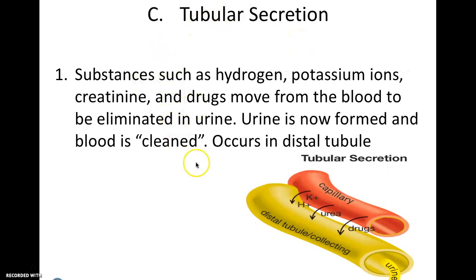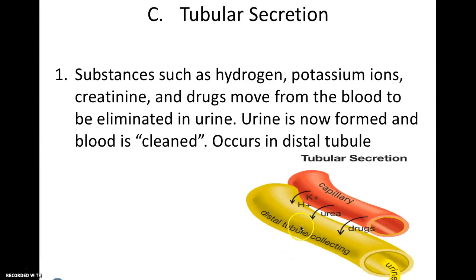Tubular secretion occurs all the way at the distal tubule. The loop of Henle is where a lot of capillaries are and deoxygenation continues. Substances such as hydrogen, potassium, creatinine, and drugs are moved from the blood to be eliminated in the urine — it's the nephron's last-ditch effort to remove anything from the bloodstream that shouldn't be there. Urine is now formed, the blood is now clean, and some remaining urea also moves in here.